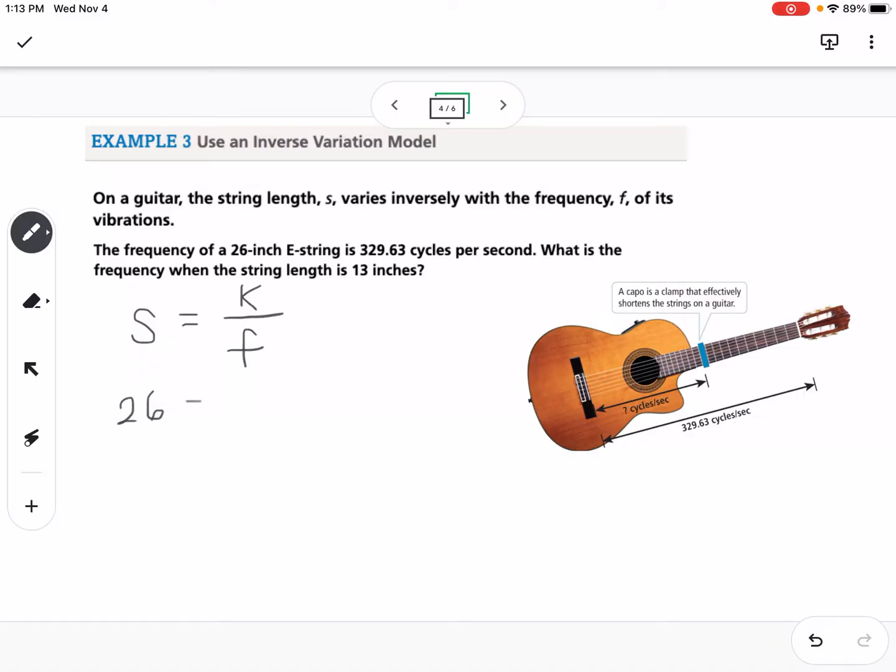It gives us that when the string length is 26, the frequency is 329.63. We can multiply those together to find k. Let's write it the opposite way. So k equals 8,570.38.